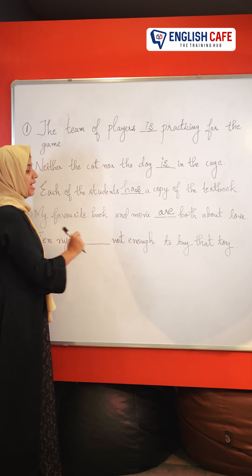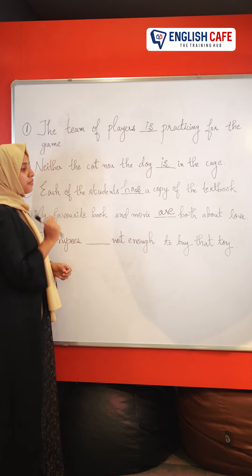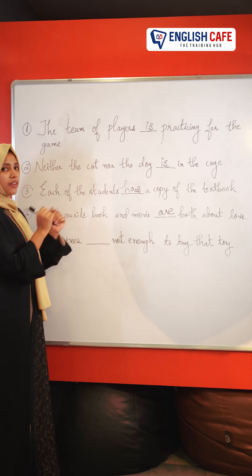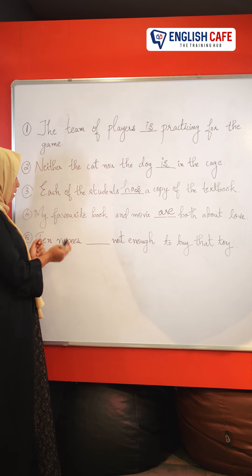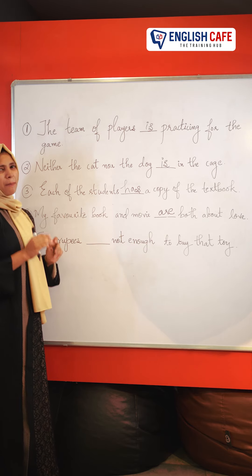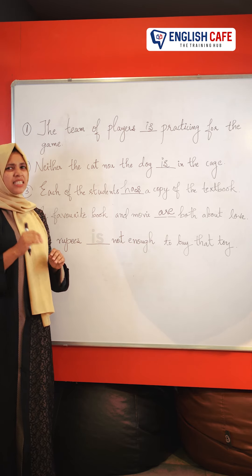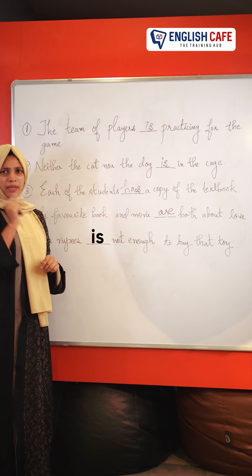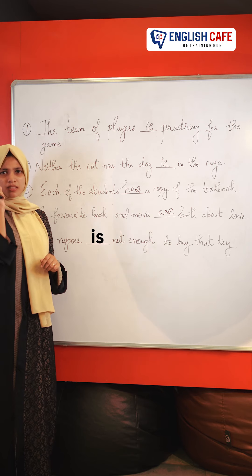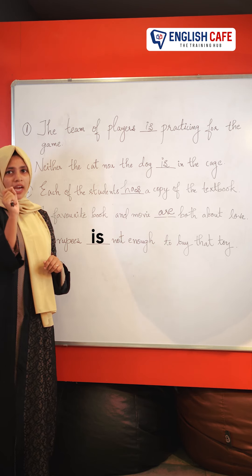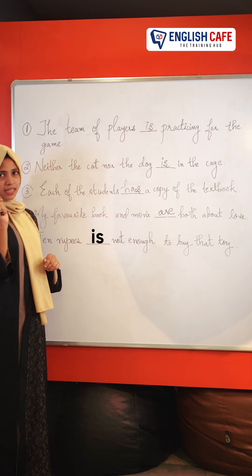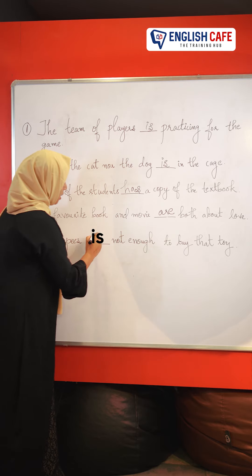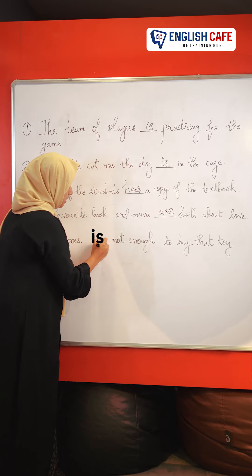Last one: Ten rupees dash not enough to buy that toy. We are not talking about ten individual rupees — we are talking about it as one amount. So, here it would be 'is' — ten rupees is not enough to buy that toy.